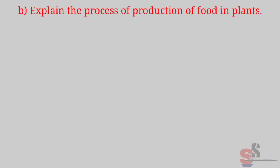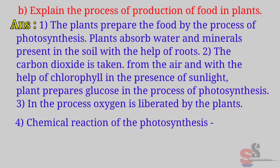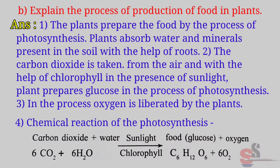B. Explain the process of production of food in plants. Answer: Plants prepare food by the process of photosynthesis. Plants absorb water and minerals present in the soil with the help of roots. Carbon dioxide is taken from the air and with the help of chlorophyll, in the presence of sunlight, plants prepare glucose in the process of photosynthesis. Oxygen is liberated by the plants. Chemical reaction: Carbon dioxide plus water, in the presence of sunlight and chlorophyll, gives glucose plus oxygen.